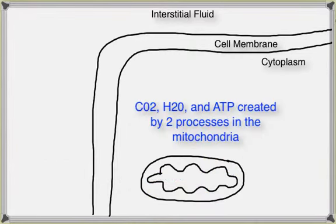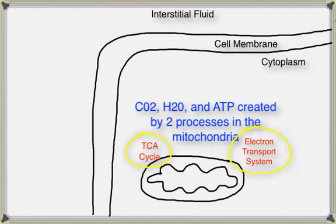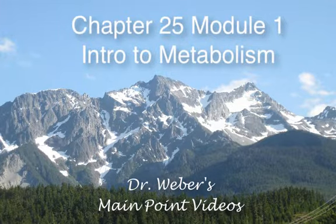This activity in the mitochondria involves two pathways: the TCA cycle and the electron transport system, which will be described in a different segment. This ends Chapter 25, Module 1: Intro to Metabolism.